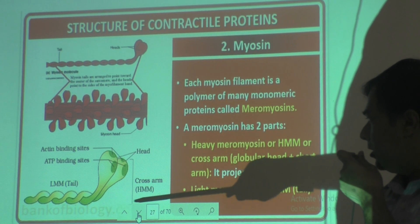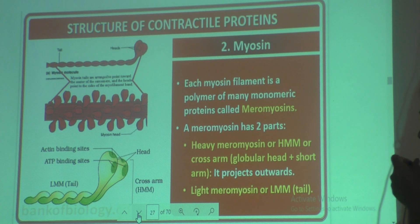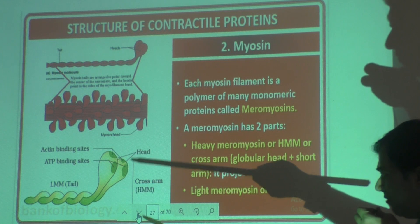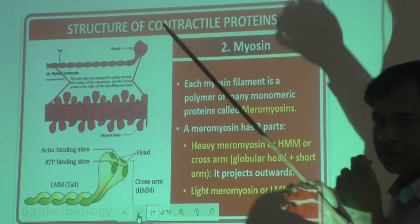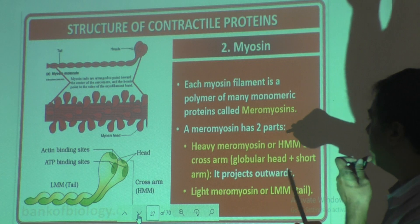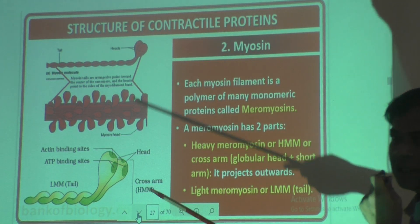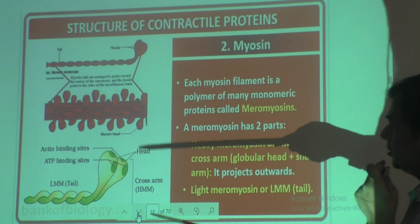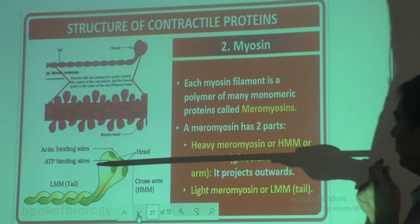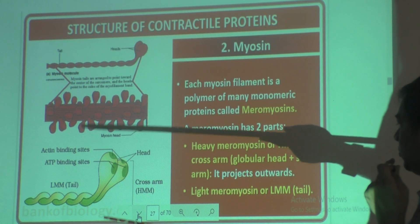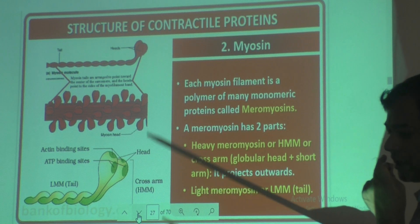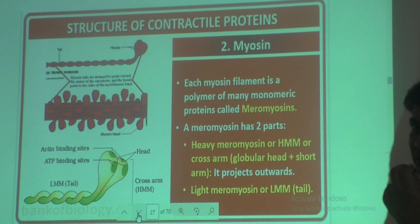The head part is called HMM — heavy meromyosin. Myosin is heavier here because it is the enlarged part. It is also called HMM — heavy meromyosin. The tail part is where myosin is less, so it is called LMM — light meromyosin.